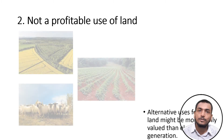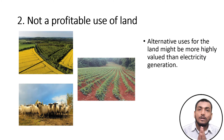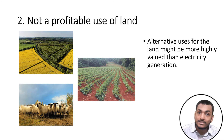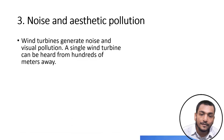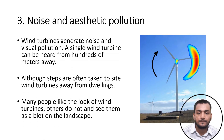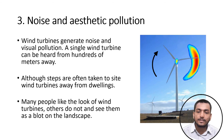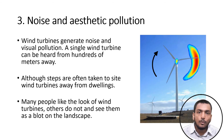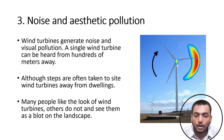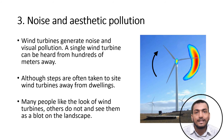Disadvantage two: not a profitable use of land. Alternative uses for the land might be more highly valued than electricity generation. Disadvantage three: noise and aesthetic pollution. Wind turbines generate noise and visual pollution. A single wind turbine can be heard from hundreds of meters away. Although steps are often taken to site wind turbines away from dwellings, many people like the look of wind turbines while others do not, seeing them as a blight on the landscape.